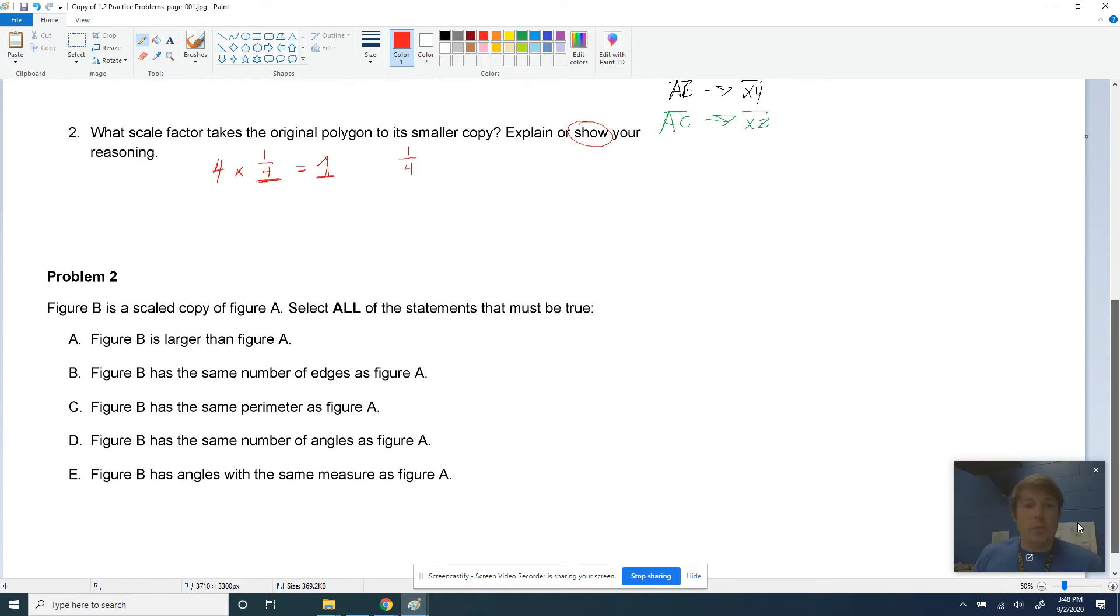Let's move on to problem number two. Figure B is a scaled copy of figure A. Select all of the statements that must be true. So does figure B have to be larger than figure A? It doesn't have to be larger. It could be smaller. Scaled copies are not designated as always being bigger or smaller. It's just different. It has to look the same, but it could be different sizes. It doesn't have to be. So that is not true. We do not want to select A.